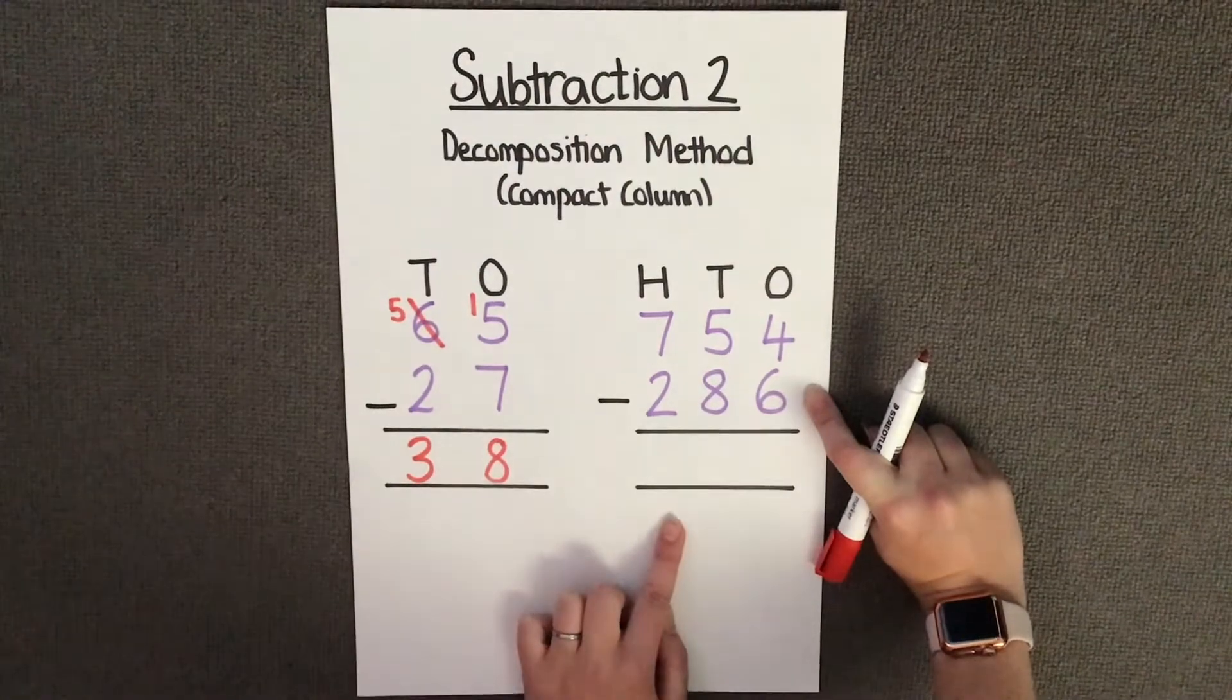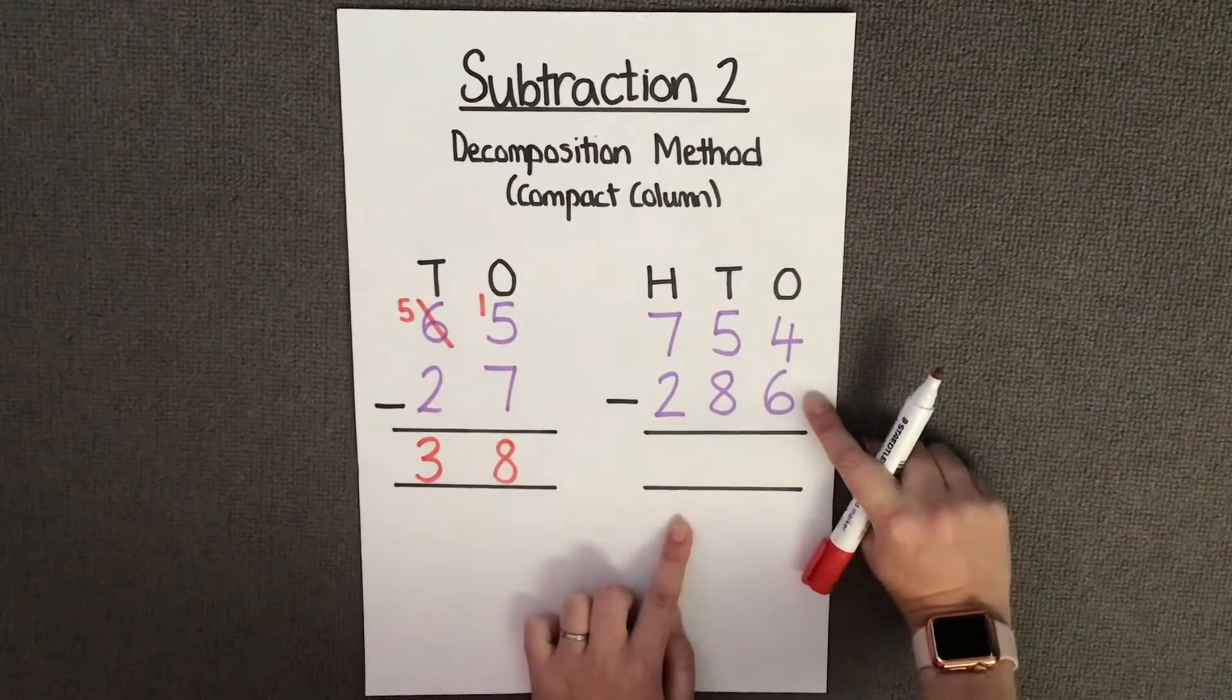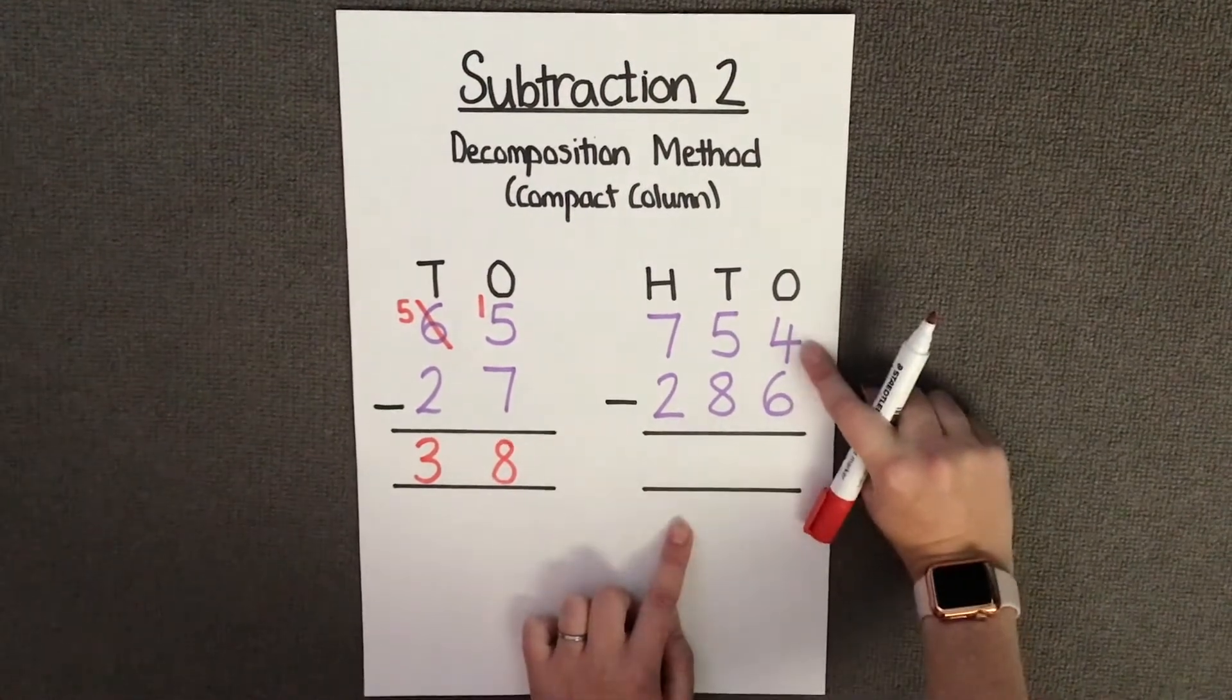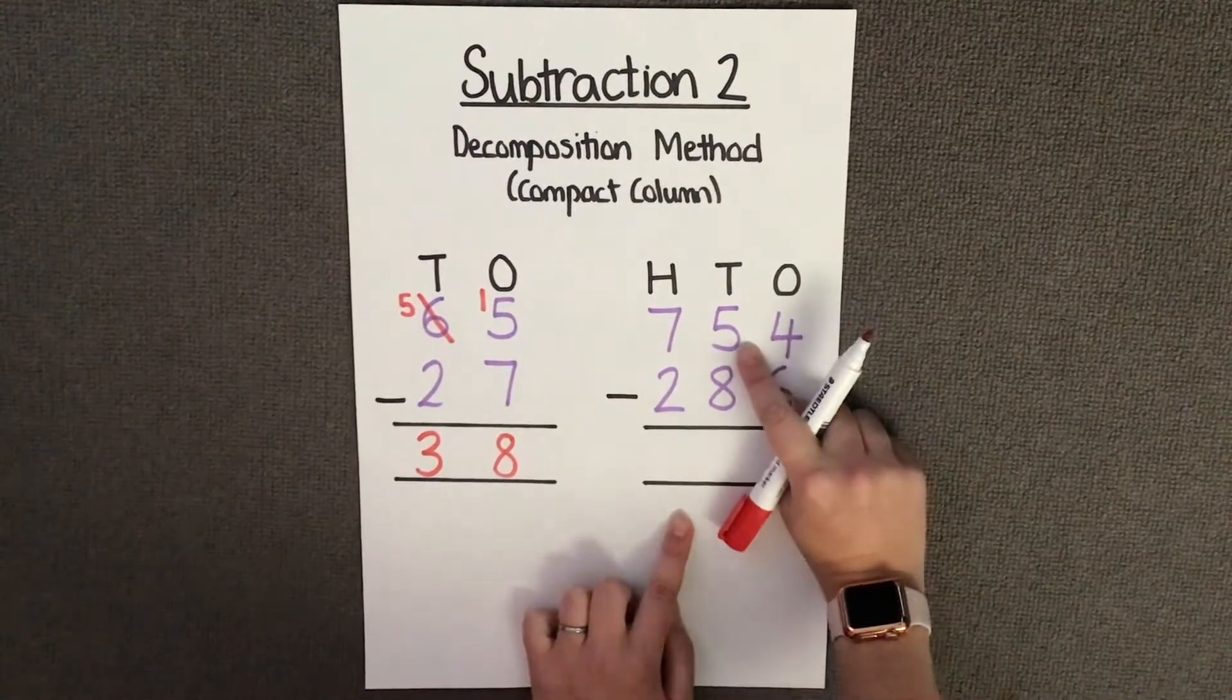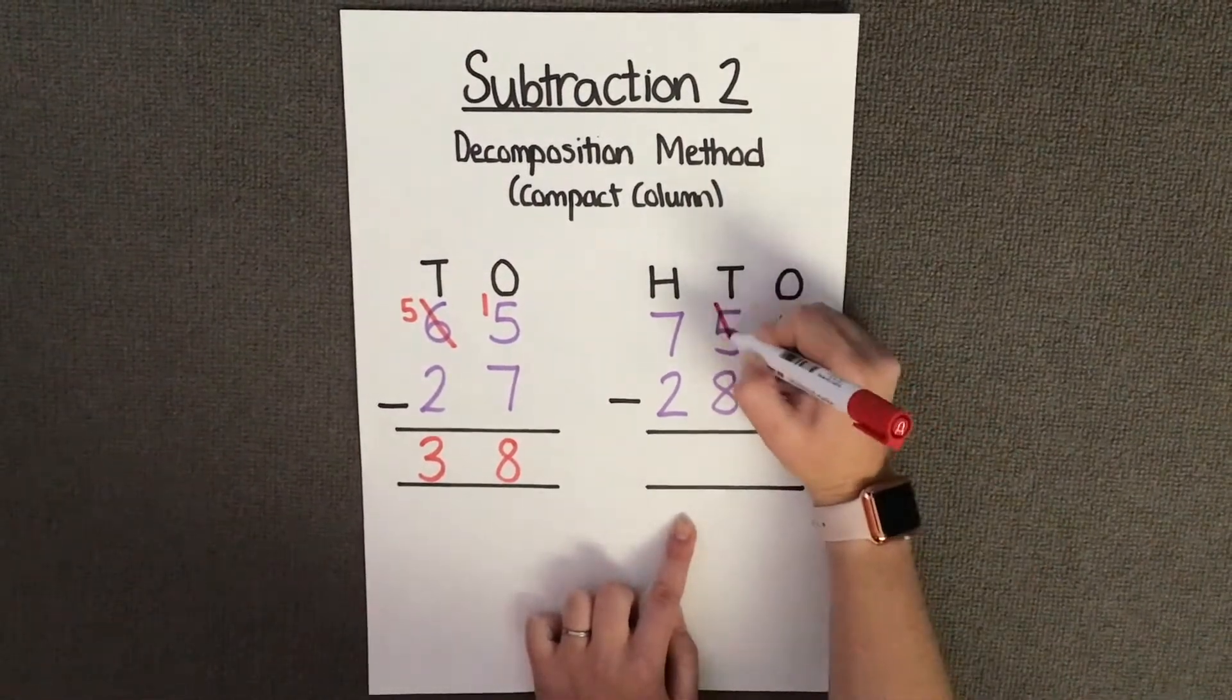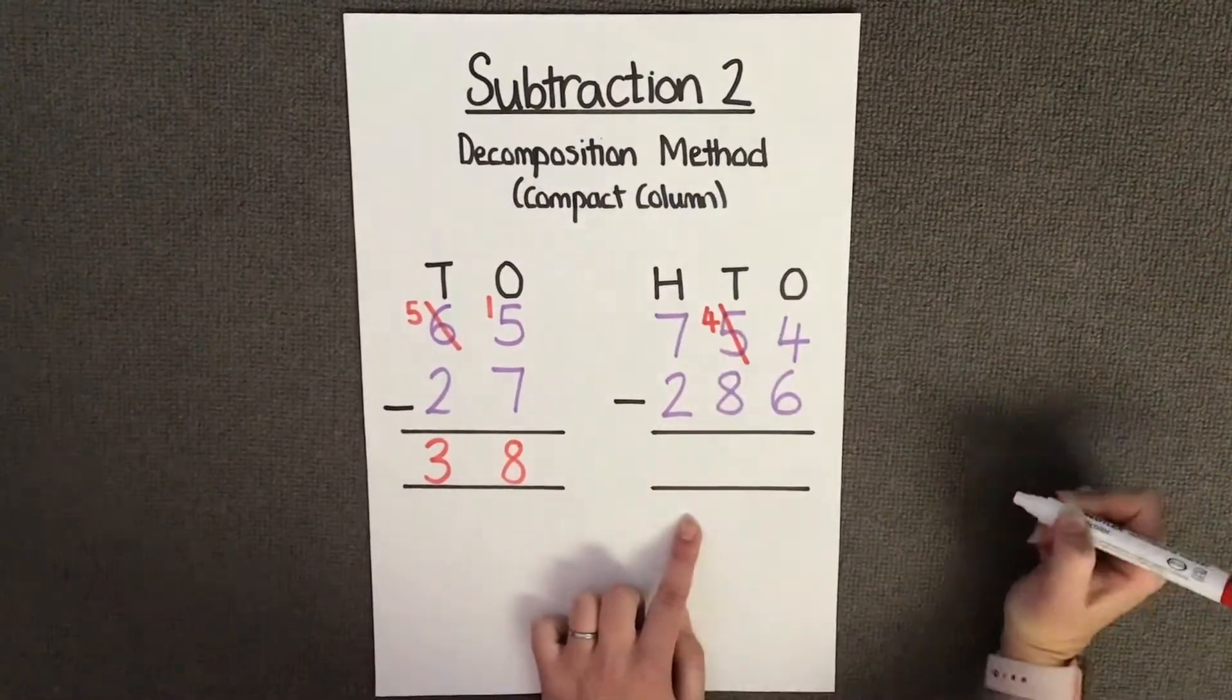I need to begin my subtraction with my ones column. So I'm going to do 4 ones take away 6 ones. Again, I do not have enough ones to take away 6, and therefore I need to borrow from the column next door. I'm going to take 1 lot of 10 from the tens column, which leaves the tens column with 4 tens.